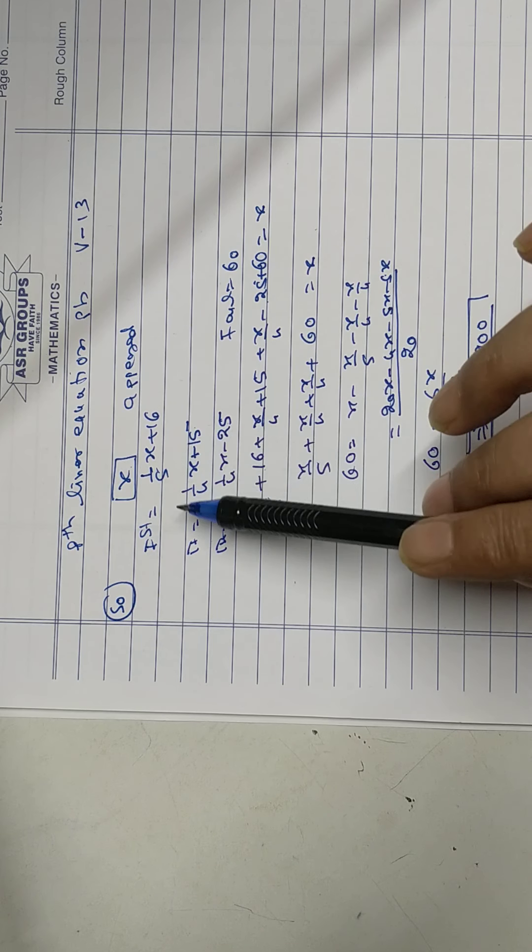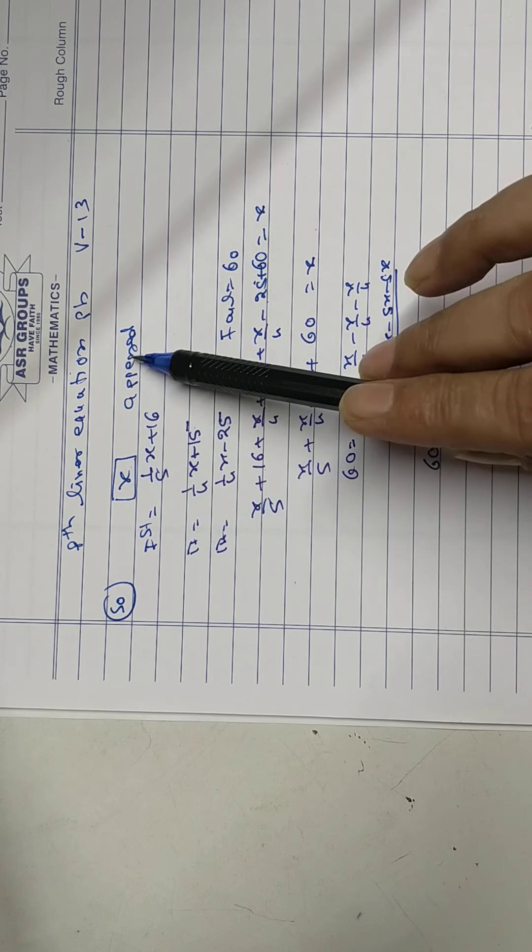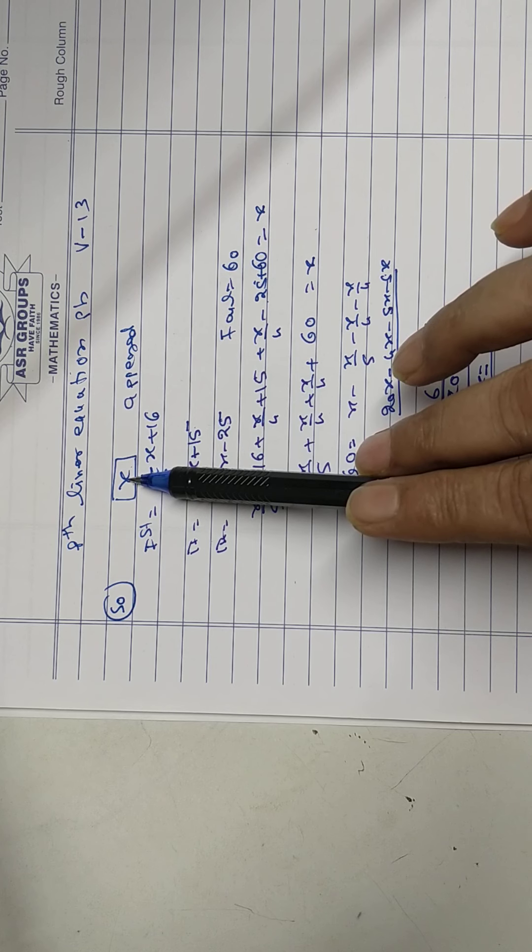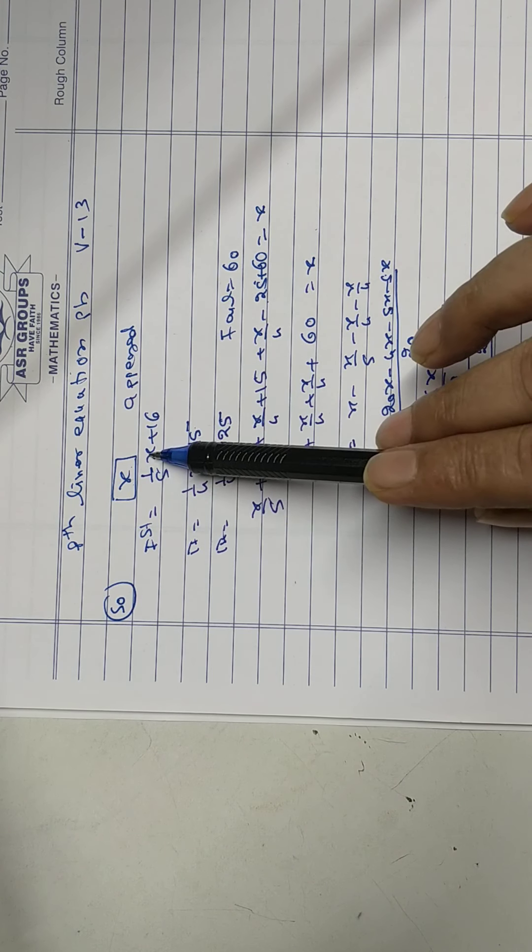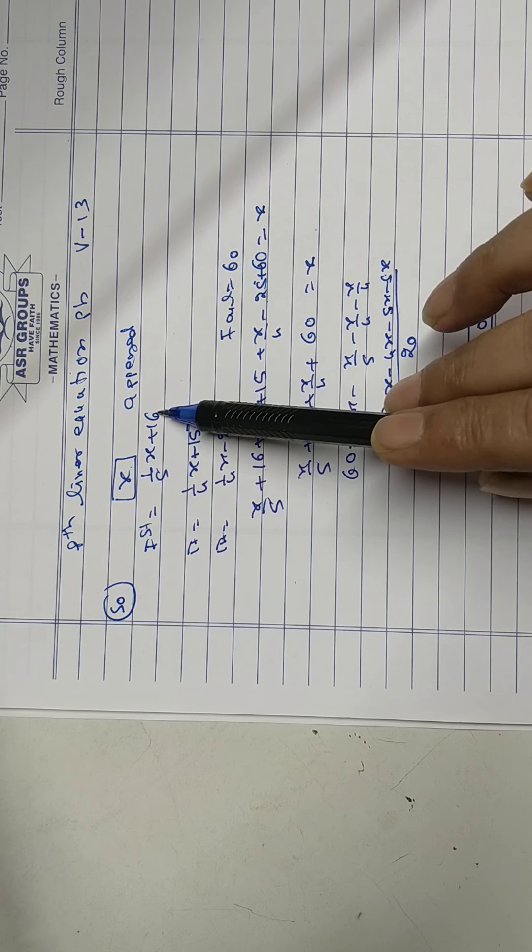Again I'll explain. Total number of students appeared for examination is x.